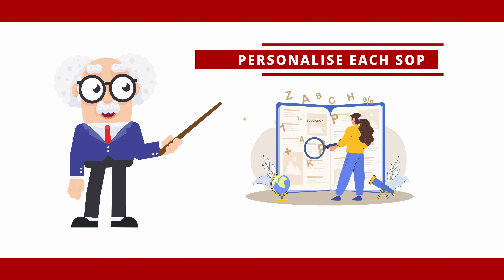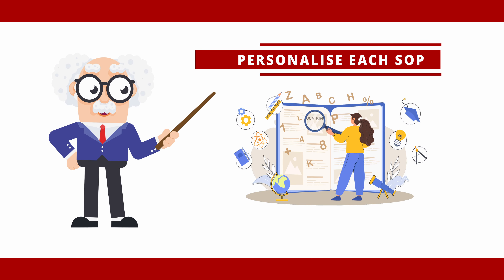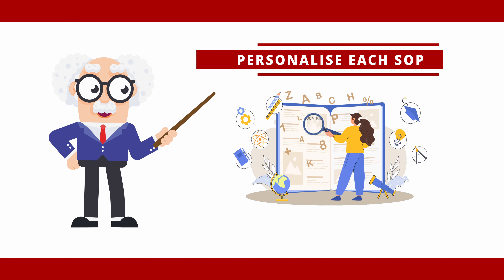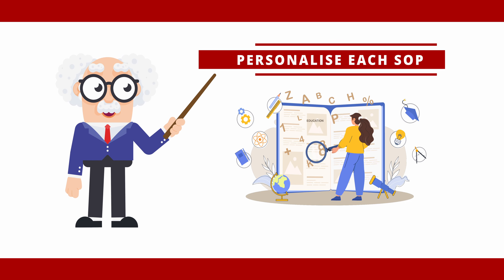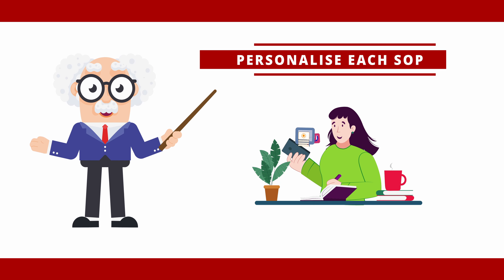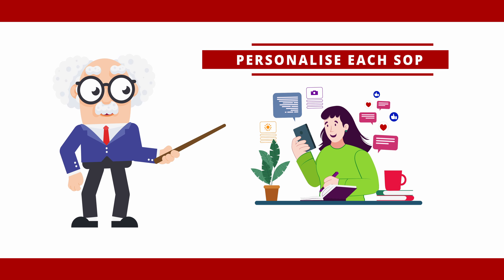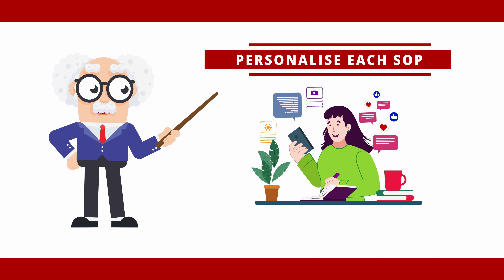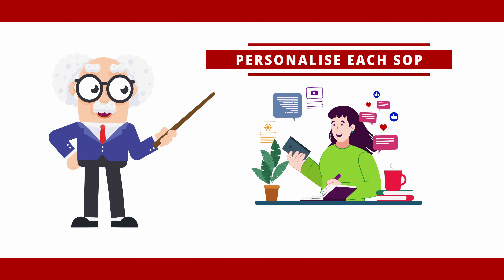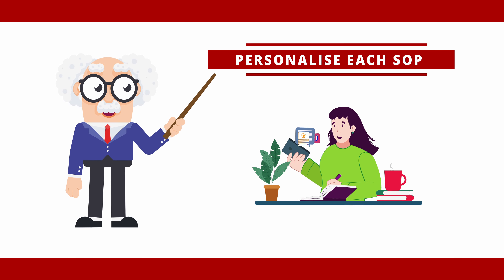Personalize each SOP. If you're applying to multiple programs or universities, make sure to personalize each SOP by identifying the university you're applying to. Admission staff can usually tell if you're using a generic SOP, which can negatively impact your application.